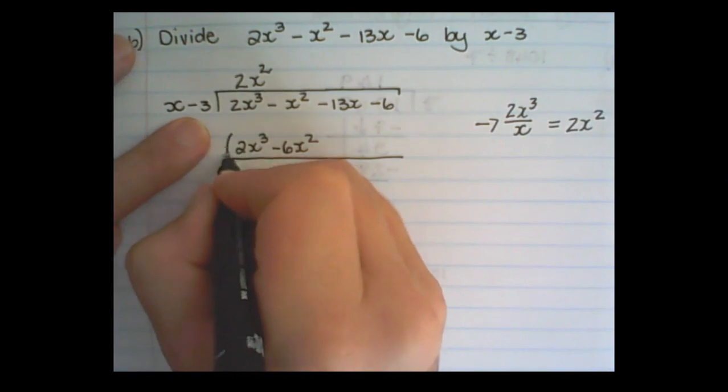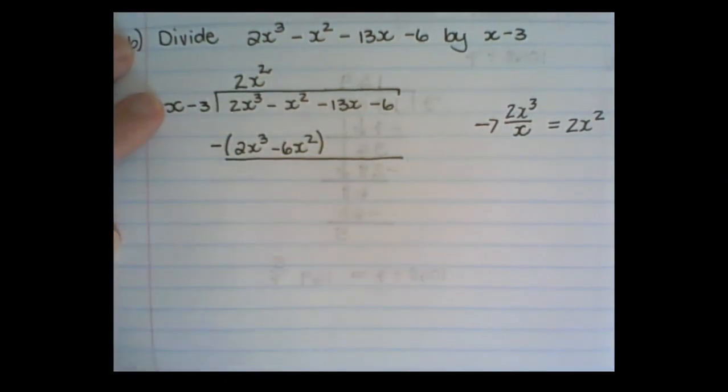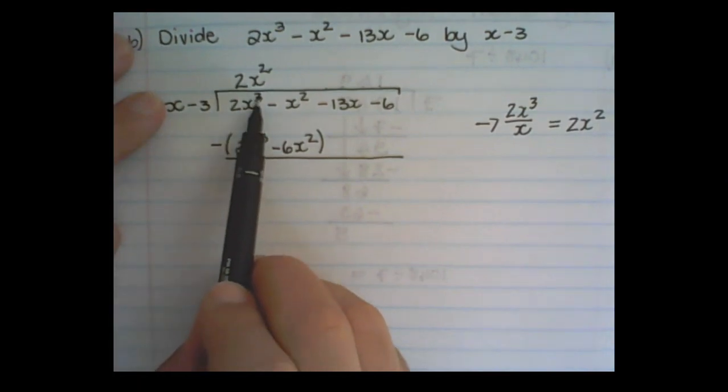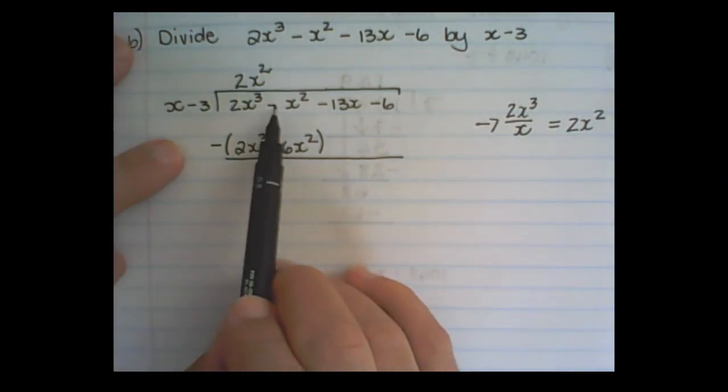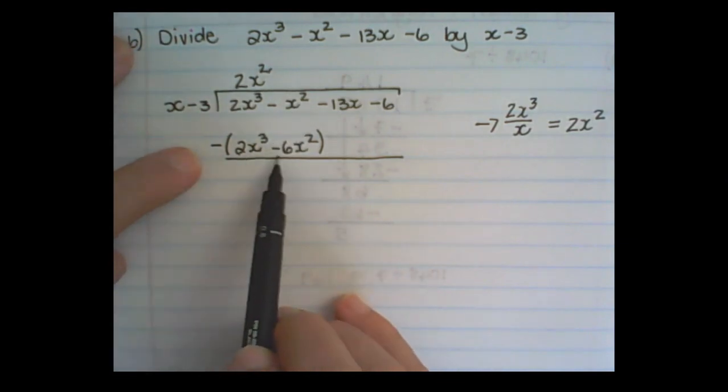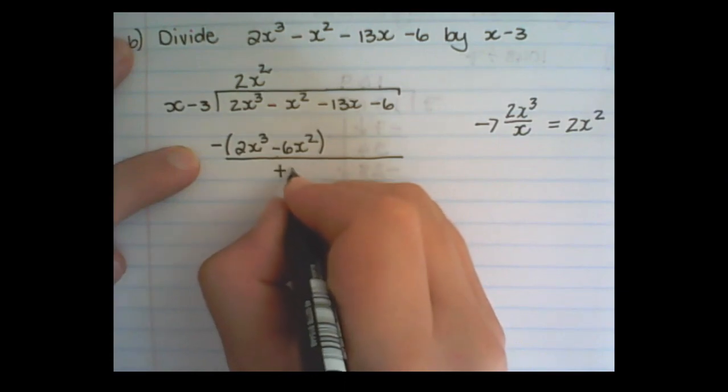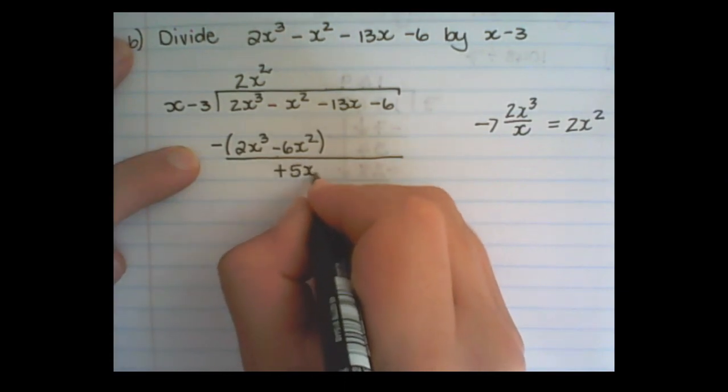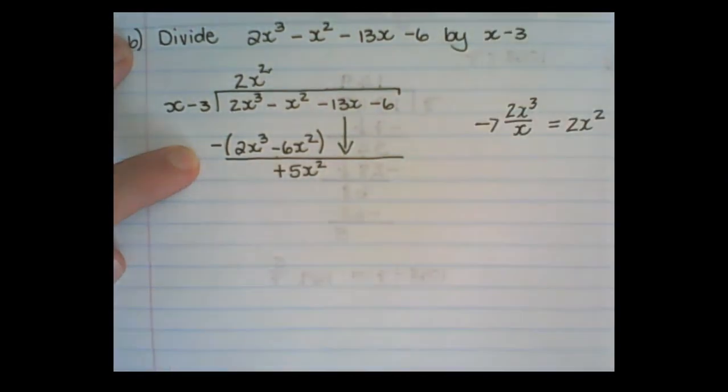And as we did before, this is the part that we subtract. So 2x cubed minus 2x cubed is 0. Then negative x squared minus minus, that will become plus 6x squared, which is then plus 5x squared. And I bring the negative 13x down.